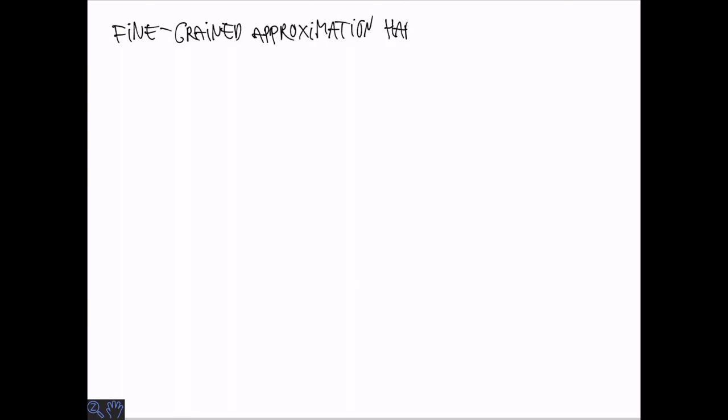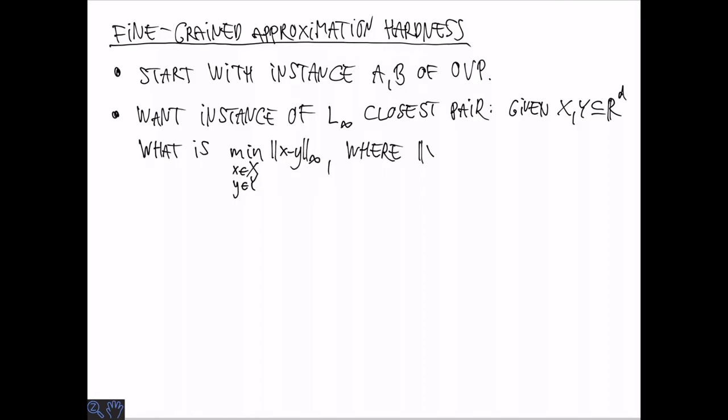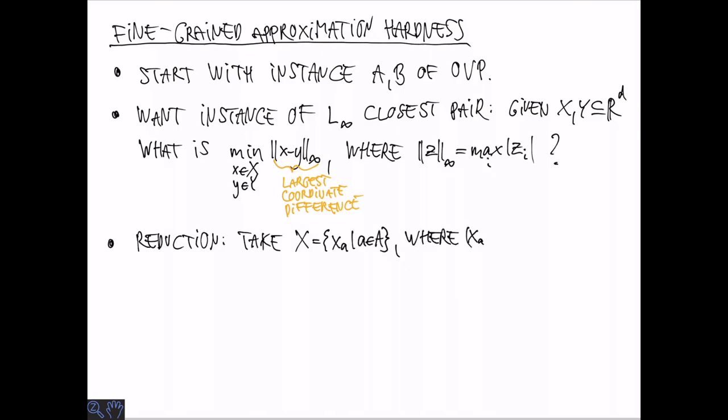Now, we see an example of a fine-grained approximation hardness result. We assume that the orthogonal vectors problem is hard and show that this implies hardness of an approximation problem. We start with the instance with sets A and B of the orthogonal vectors problem and create an instance of the L-infinity closest pair problem. This is given two d-dimensional vectors, x and y, and we ask what is the minimum distance between a vector in x and a vector in y, where we measure distance in terms of the L-infinity distance, the maximum coordinate-wise distance. The reduction goes as follows: we create the set x from the set A from the OVP problem. For each vector A in A, we define xA where the i-th coordinate is either 1 if ai equals 1, or 1 third if ai equals 0. The set y is defined from b in almost the same way. If bi is 1, we set it to 0, otherwise we set it to 2 thirds. It's easy to confirm that the L-infinity distance between xA and yB is either 1, which happens if there is a coordinate where both ai and bi is 1, so if the dot product is greater than 0, otherwise it's 1 third. If there exists a pair with a dot product of 0, they have L-infinity distance 1 third, otherwise all pairs have distance 1. That means that solving the closest pair problem within approximation factor say 2.99 in time n to the 1.999 would imply solving the orthogonal vector problem in the same time bound.